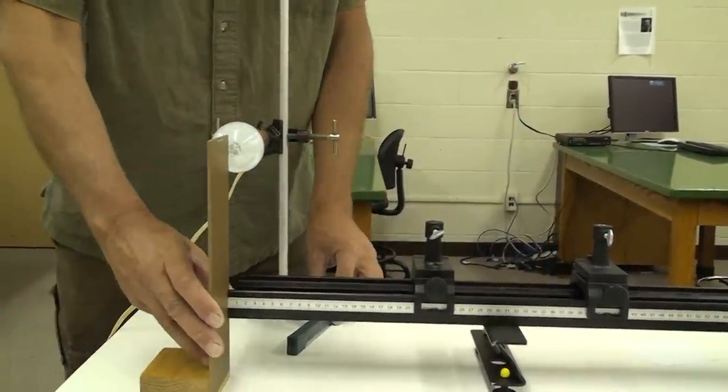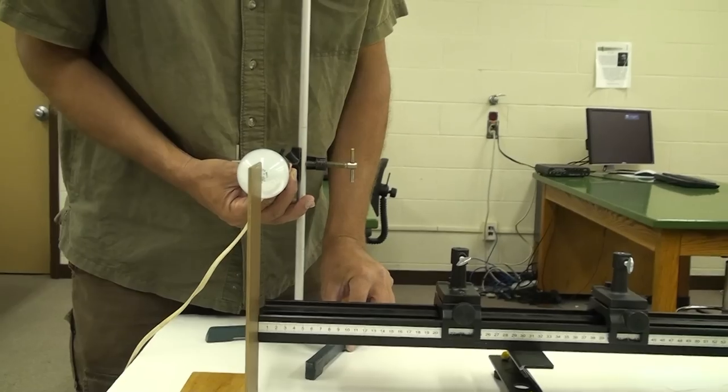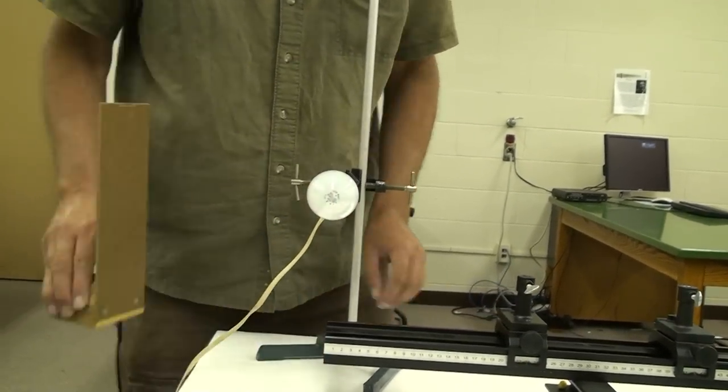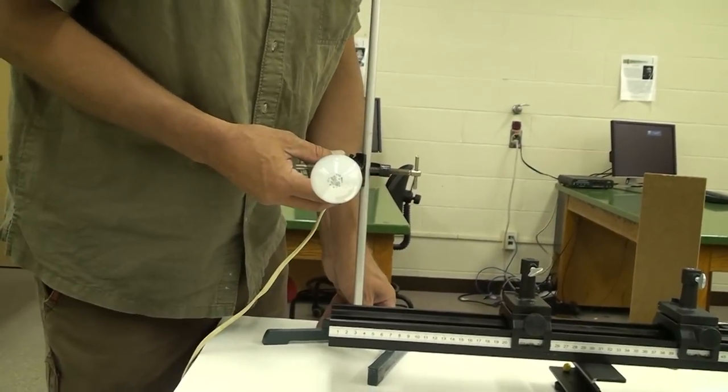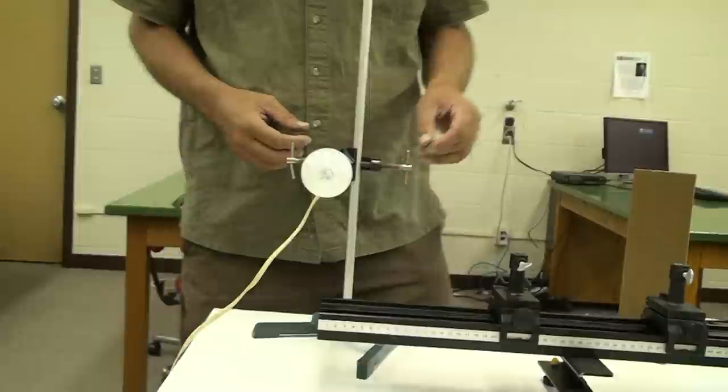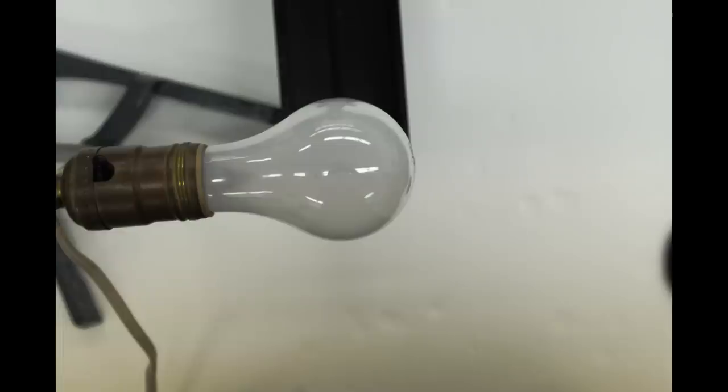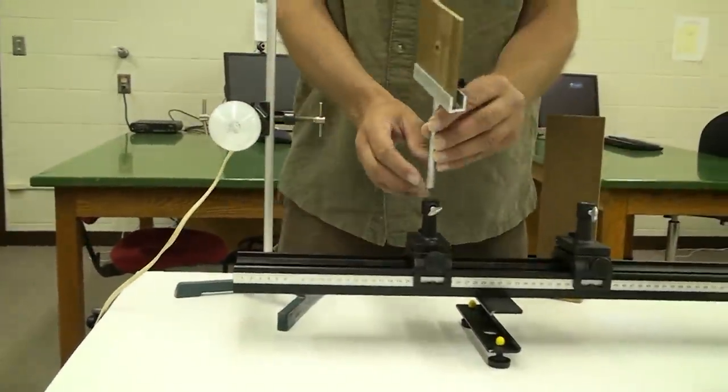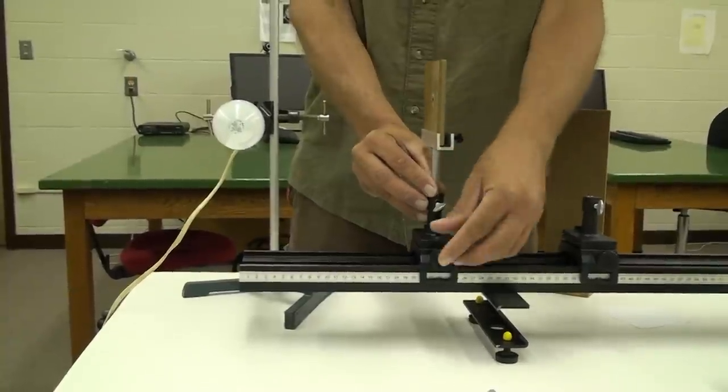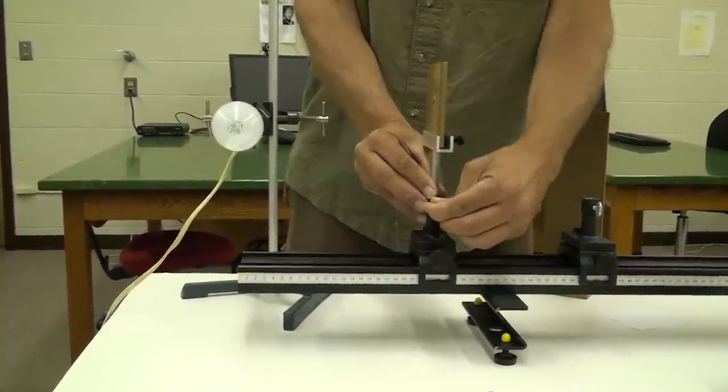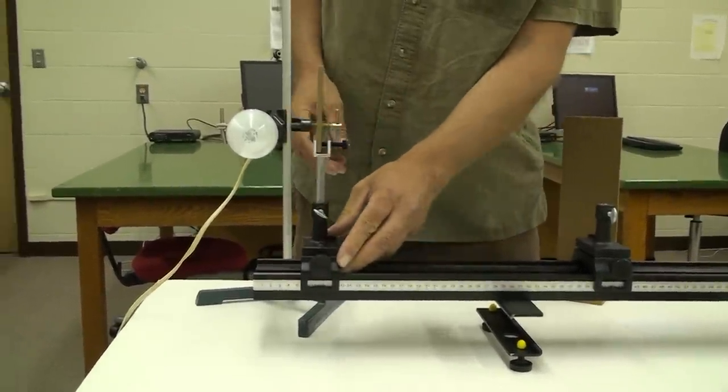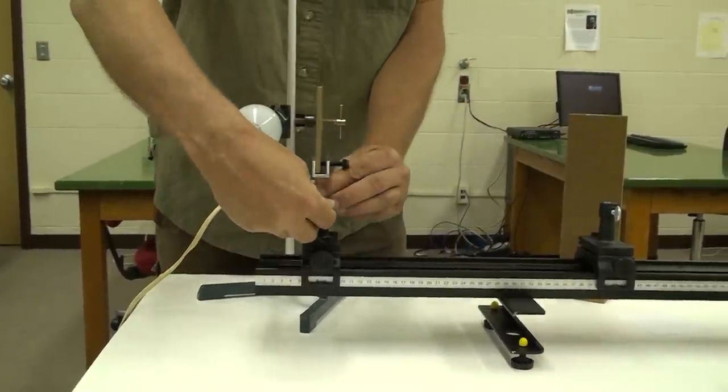Begin by making sure that the 100 watt bulb is centered over the zero centimeter mark on the optical bench. Also check from a bird's eye view that it is centered over the bench laterally. Place an aperture hole close to the bulb at the same level as the bulb and in line with the optical bench. This small hole makes the light bulb more like a point source of light.